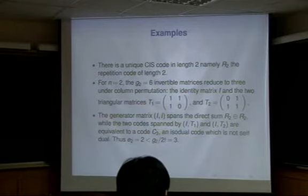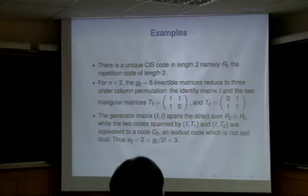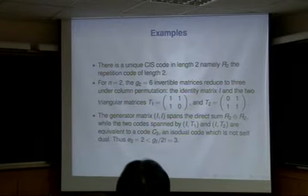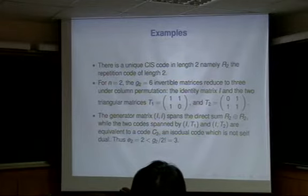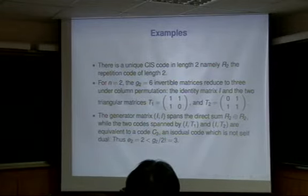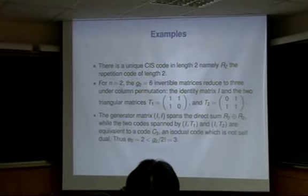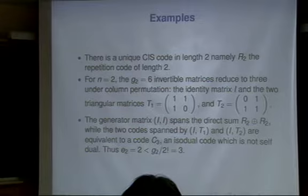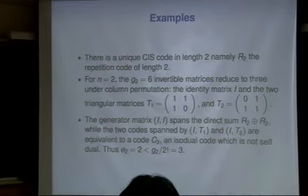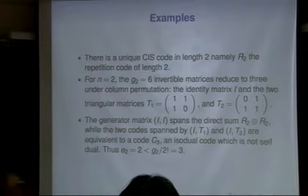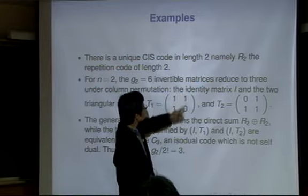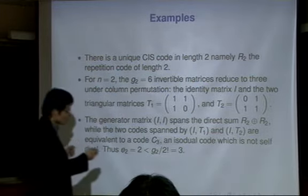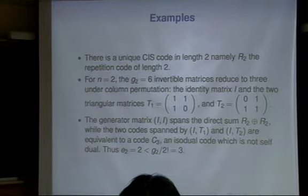If length is 2 (N=1), then you have only one CIS code, generated by just the all-one vector (1,1). When N equals 2, meaning the actual length is 4, then either part or its complement gives an invertible matrix, but they become equivalent by permuting columns. So these two give you one code, and trivially the identity case gives another. You have only two inequivalent CIS codes. But from the previous calculation, the formula gives you three — so for the small case it's not too bad.